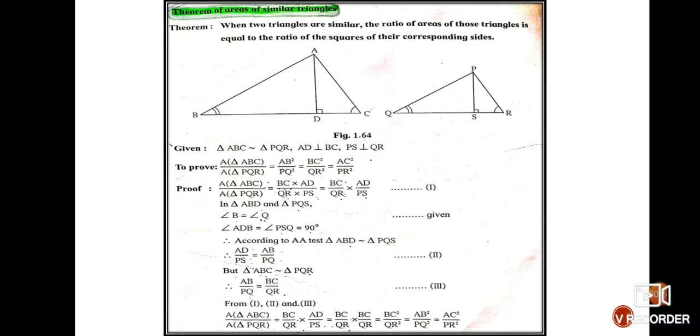Let us begin with the theorem — theorem on areas of similar triangles. Let us read the statement: when two triangles are similar, the ratio of areas of those triangles is equal to the ratio of the square of their corresponding sides.